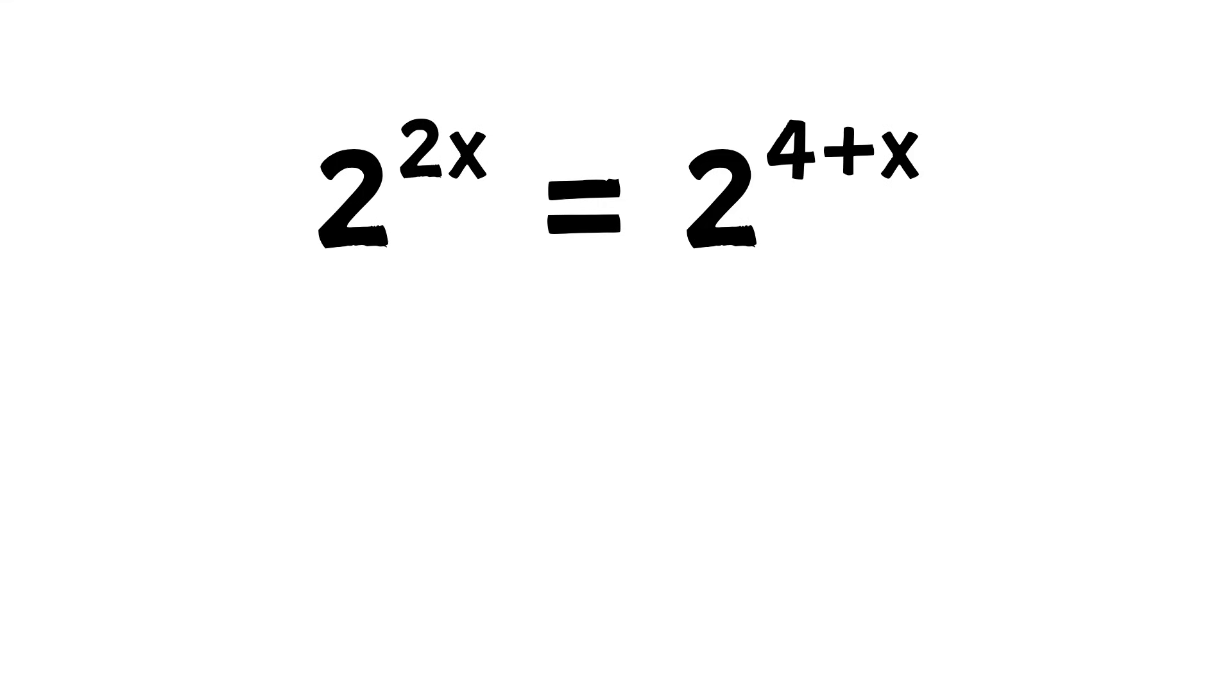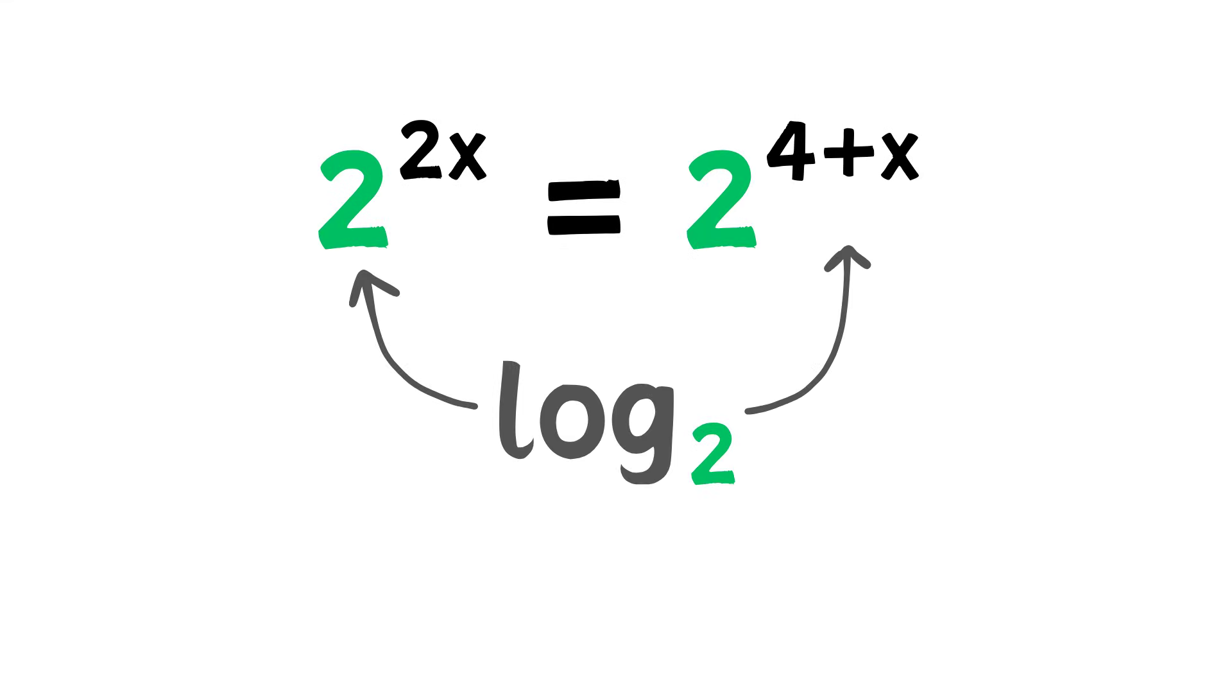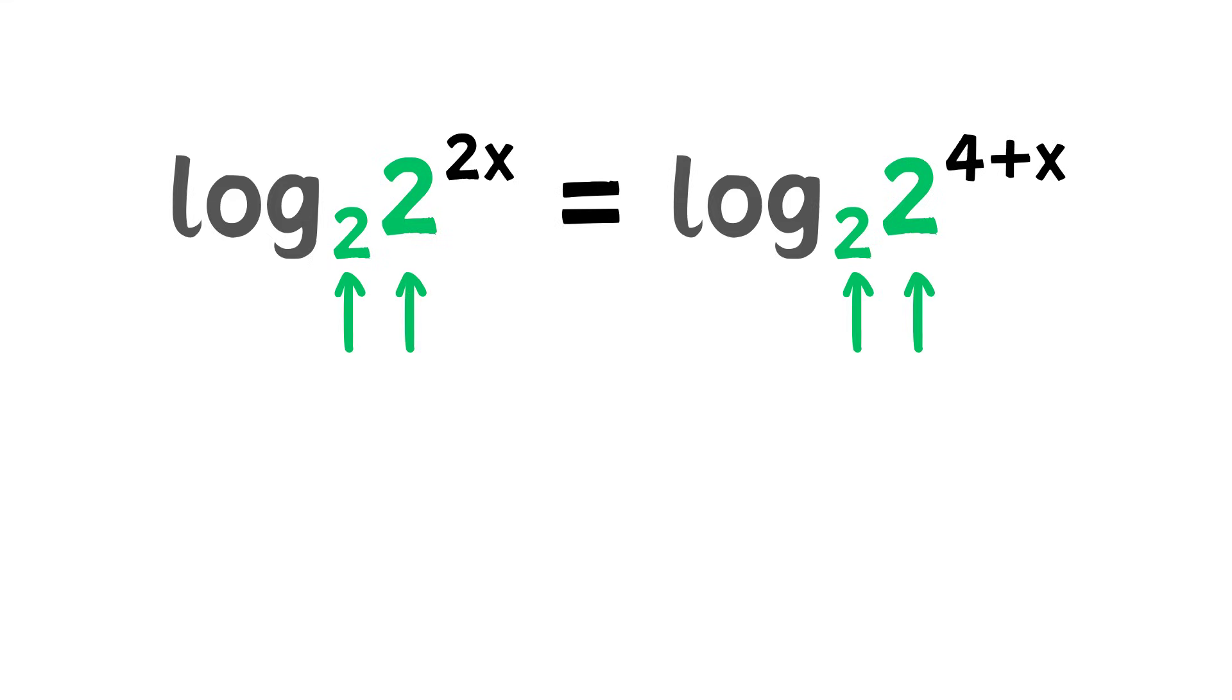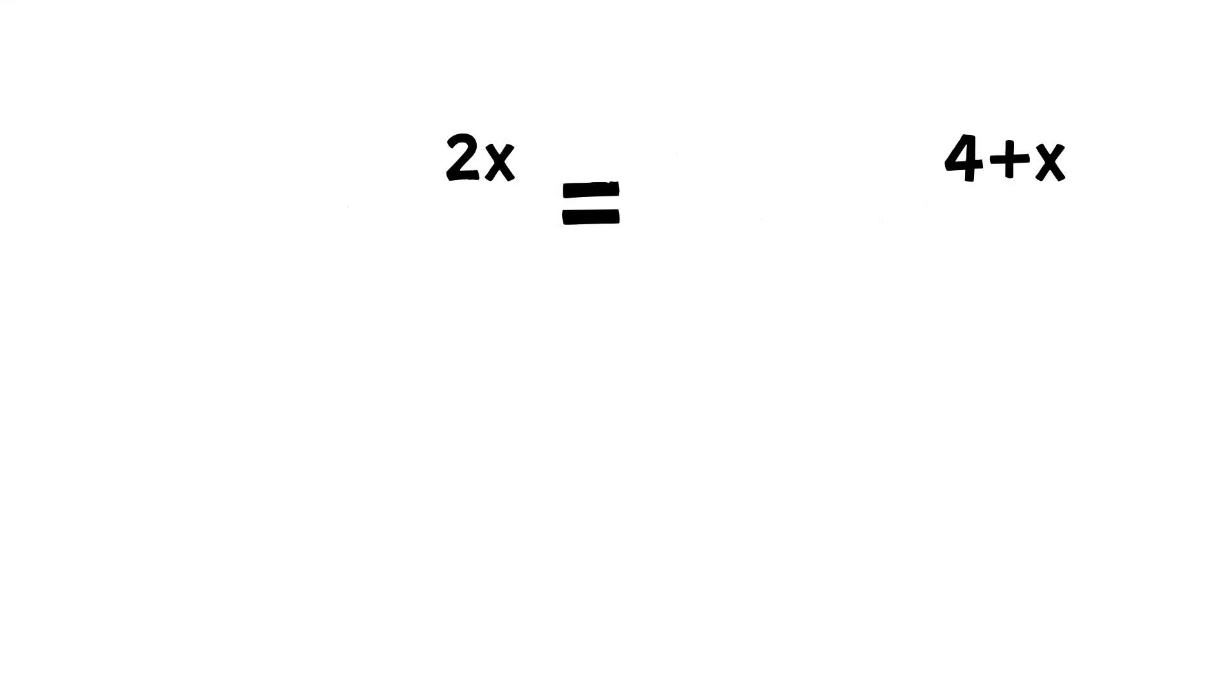But here, since both sides have a base of 2, if we take the logarithm of both sides with a base of 2, since the bases are the same, now we are left with just the exponents. 2x equals 4 plus x.